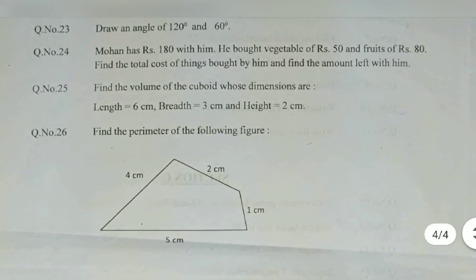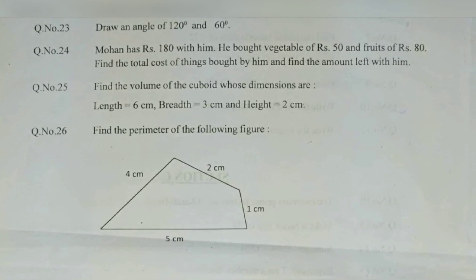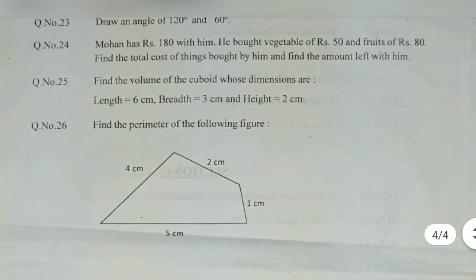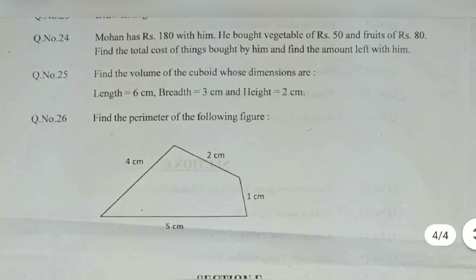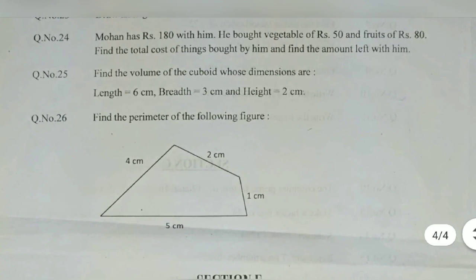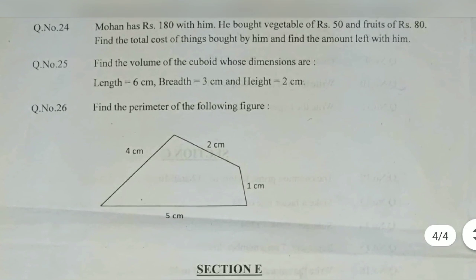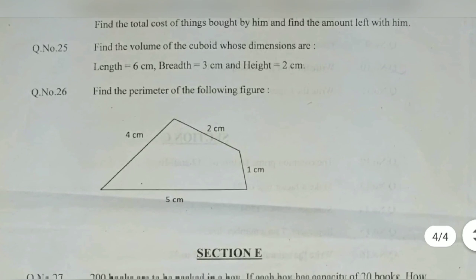Draw an angle 120 degrees and 60 degrees using protractor. Mohan has RS 190 with him, he bought a vegetable RS 50 and fruit 80, find the cost of both and find the amount left with him.